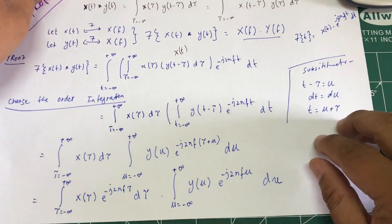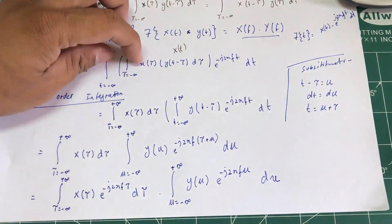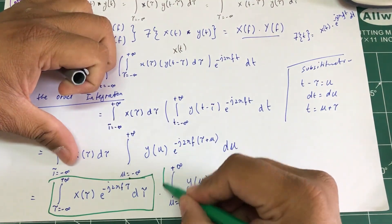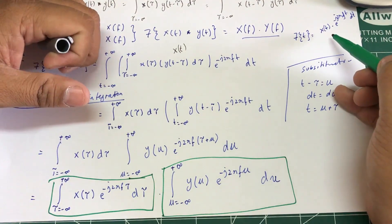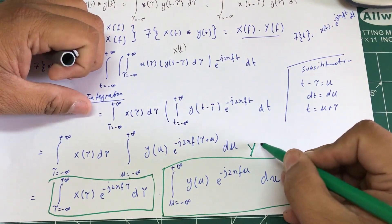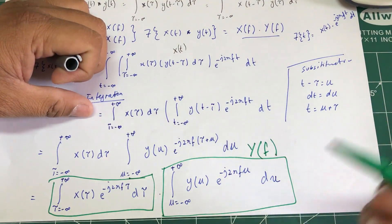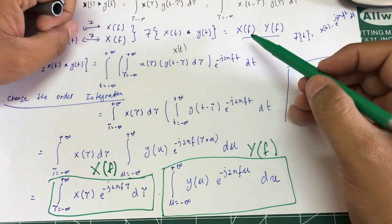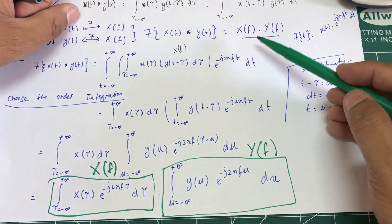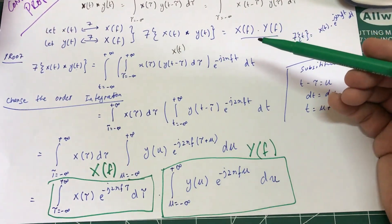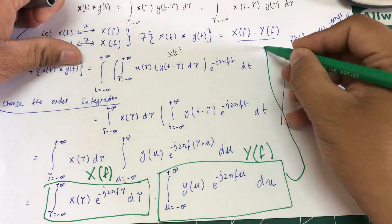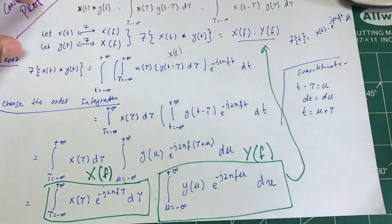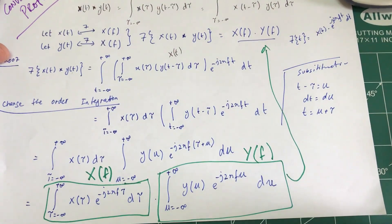When you look at it closely, each of these integrals is exactly the definition of a Fourier transform. This one is Y(f) and this one is X(f). Hence the proof is complete: when you convolve two signals together it's just like taking the individual Fourier transform of each signal and simply multiplying them. That's how you prove the convolution property of the Fourier transform. If you have any questions, leave them in the comments and don't forget to subscribe.